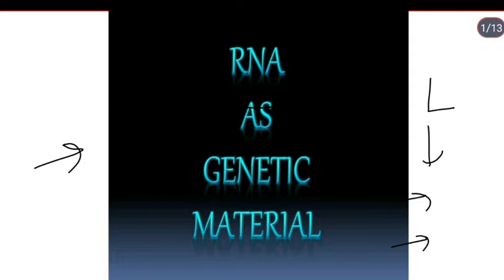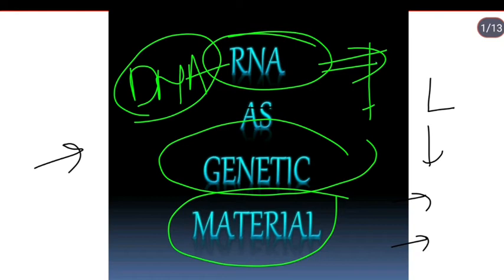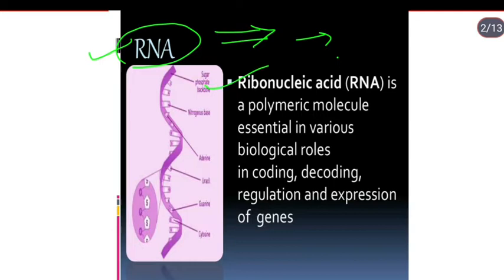RNA as genetic material. We know that DNA is the genetic material in most organisms - DNA double helix. But in some organisms, RNA is the genetic material that is transmitted from parent to offspring. We will explore RNA in detail.